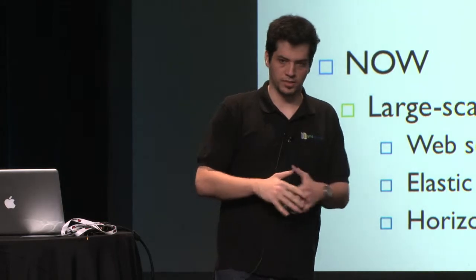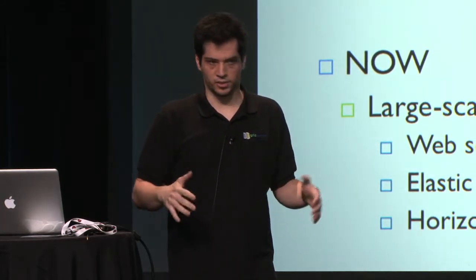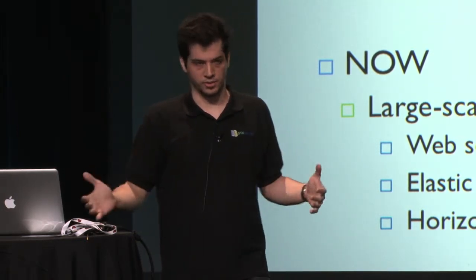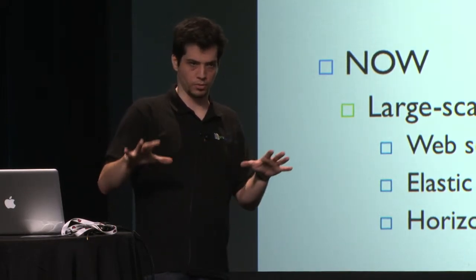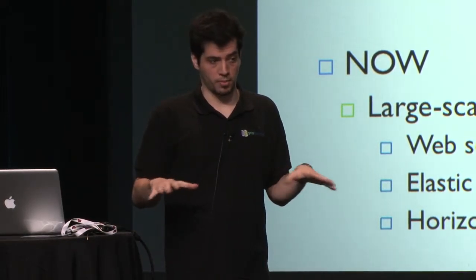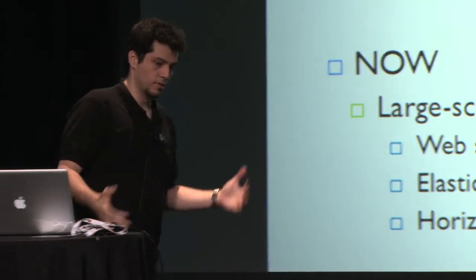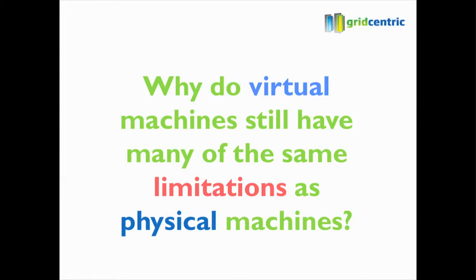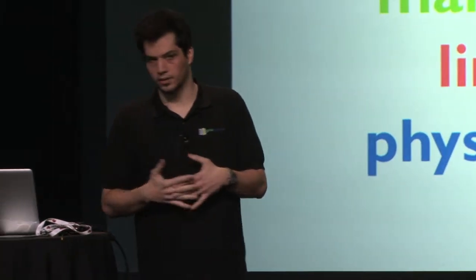So web services, you've got some front end tier, and you're going to deploy dozens or hundreds of VMs in your front end, virtual desktop infrastructure with hundreds or thousands of seats. The question we ask ourselves at GridCentric is: how can we improve virtualization for these newer use cases? Why do virtual machines still have many of the same limitations as physical machines? We're still booting them and treating them like legacy infrastructure.